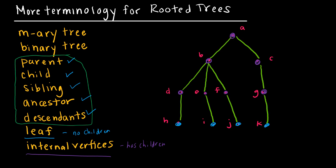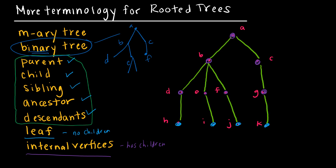Now let's talk about an M-ary tree and binary tree. A binary tree means each vertex has at most two children — binary means two. So it's okay for a vertex to have one child, but at most two. This is an example of a binary tree because no internal vertex has more than two children.